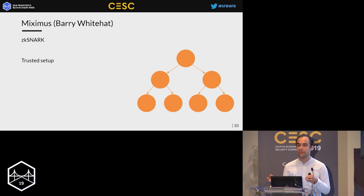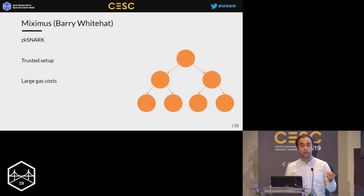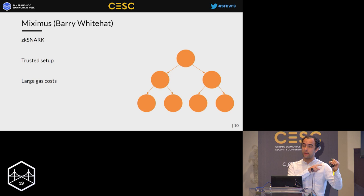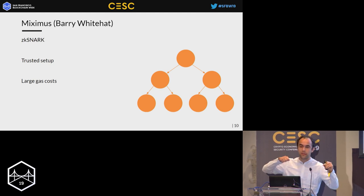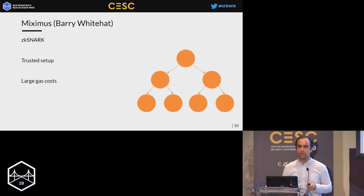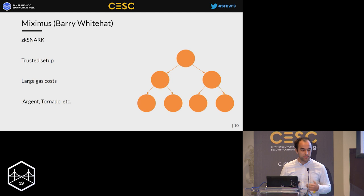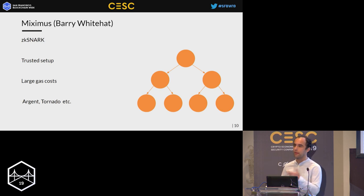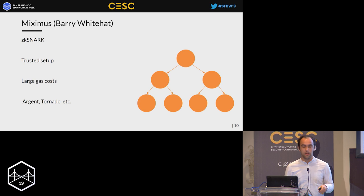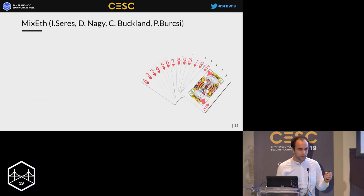The downside is that we would need to run a community-wide trusted setup, and we already know from the Zcash ceremony that running trusted setups is far from trivial. Moreover, the deposit and withdrawal gas costs of Miximus are quite large — verifying a ZK-SNARK proof on-chain costs around half a million gas. There are companies actively implementing this, including a browser implementation and an iOS application.